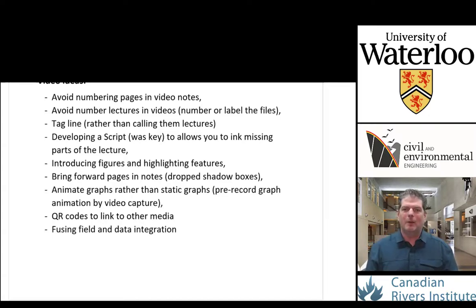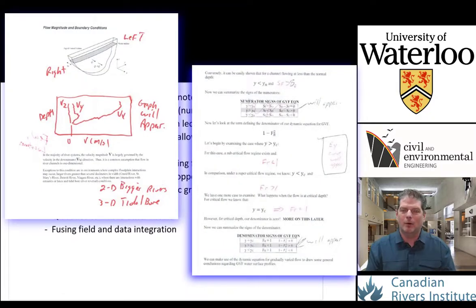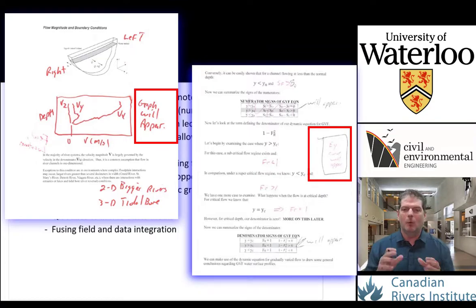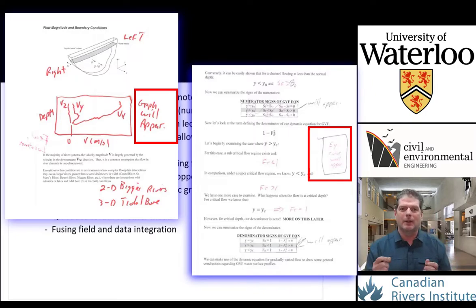Probably one of the most critical things in the whole development of the videos is to develop a script. This entails having your course notes in whatever fashion you want to record them, but also taking time to think about what you could insert after the fact during production — a video, a picture, an annotated graph — and jotting those down in your physical script. Then you can actually talk about them freely as you're doing the video, as if it's a seamless part of the presentation, and you can time the introduction of photos or videos coincident with the speech and delivery.